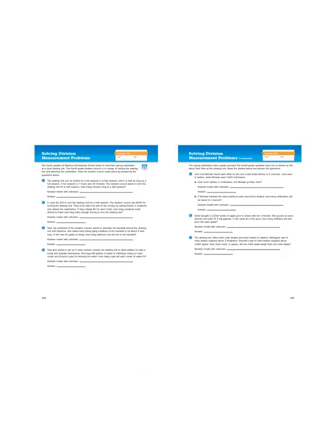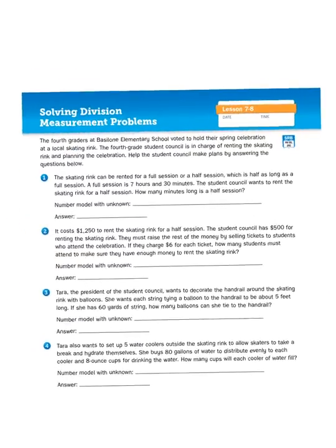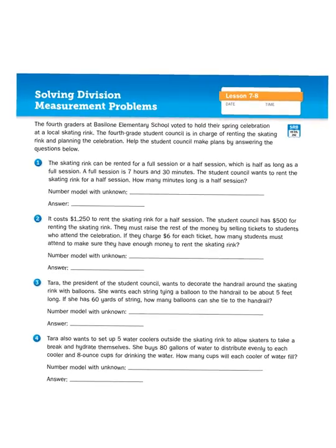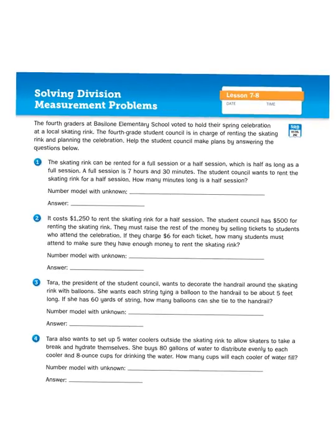Each of these story problems is going to involve a different type of measurement system, or different kinds of units. So you'll need to refer to that table frequently. But let's jump right in. The fourth graders at Barcelona Elementary School voted to hold their spring celebration at a local skating rink. The fourth grade student council is in charge of renting the skating rink and planning the celebration. Help the student council make plans by answering the questions below.